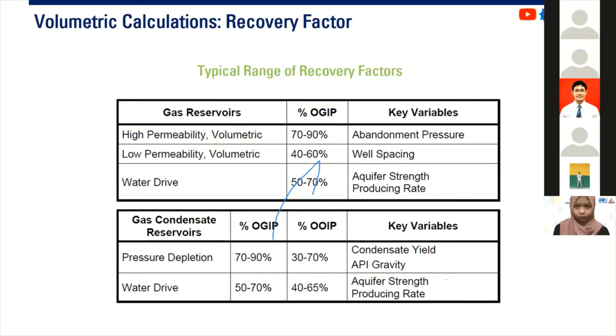And if we have gas reservoir with aquifer, water drive, it will be quite challenging. And maybe we can produce up to 50 to 70 percent depending on the aquifer strength and our production rate. You can see also here the data for gas condensate reservoir. But in this particular presentation, we just want to focus on gas reservoir.